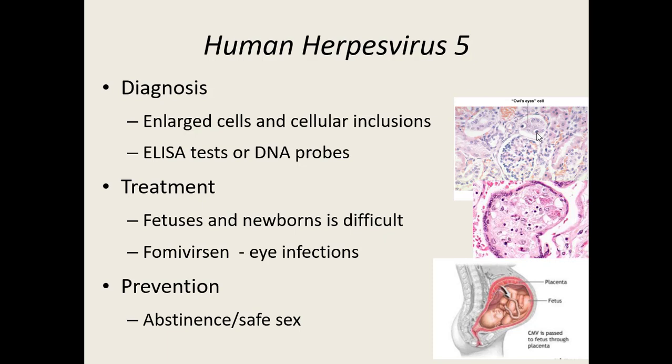Best prevention: abstinence, safe sex, using condoms, and mutual monogamy will all help limit how this particular virus spreads.